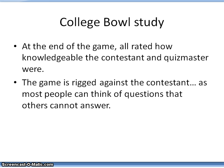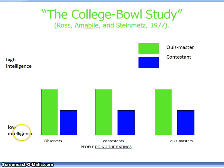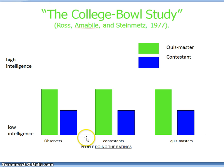What were the results? The y-axis shows low to high intelligence, across observers, contestants, and quiz masters. The green bars represent judgments about the quiz masters, and the blue bars represent judgments about the contestants. From the observer's point of view, observers rated the quiz masters as having higher intelligence than the contestants. The contestants also rated the quiz masters as more intelligent than themselves, and the quiz masters did so too — so there was agreement that the quiz masters were more intelligent than the contestants.